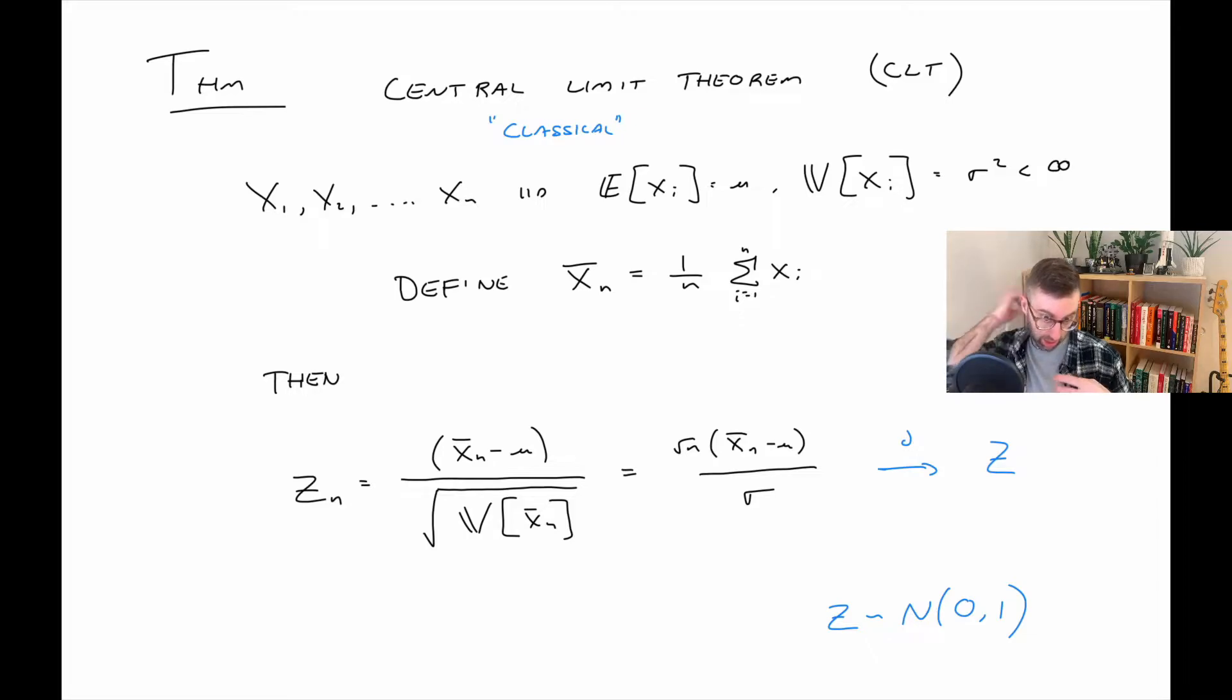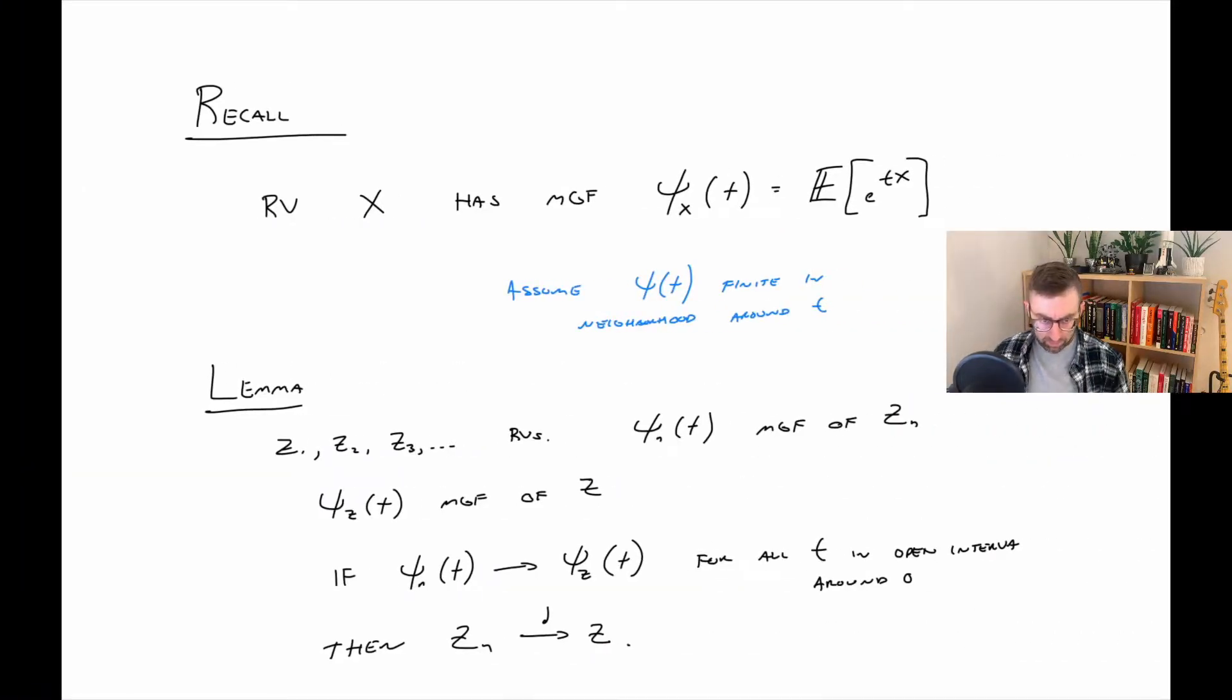We have random variables x1 through xn that are iid with some mean μ and finite variance σ squared. Then, if we perform this transformation of the sample mean to standardize it, that quantity z sub n converges in distribution to standard normal. This is pretty remarkable, considering we have minimal conditions on what potential distributions the xi could have, but they all end up converging in distribution to standard normal, provided it meets the conditions.